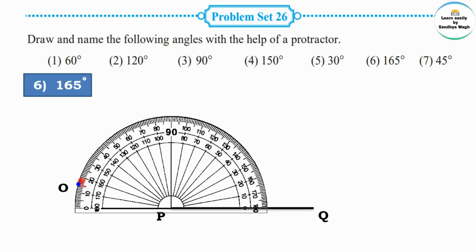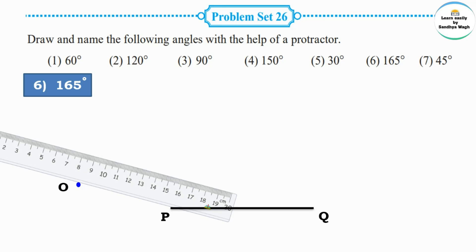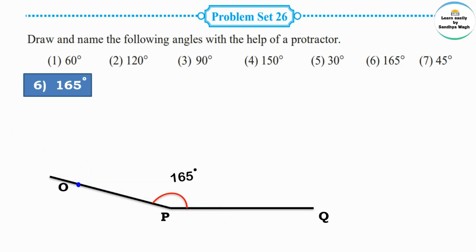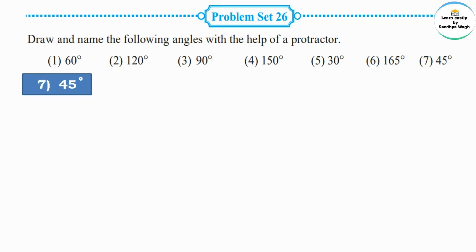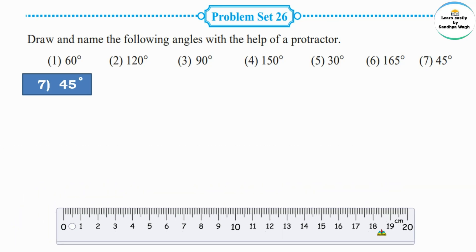Name that point O. With the help of a ruler, join vertex P and marking point O. The 165 degree angle is ready. The angle name is OPQ. P is the vertex, and PO and PQ are the arms of this angle.